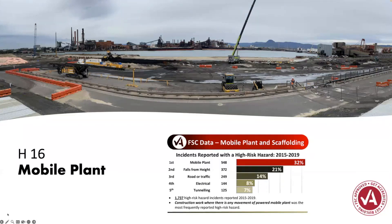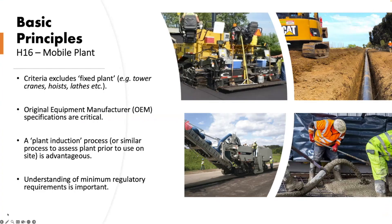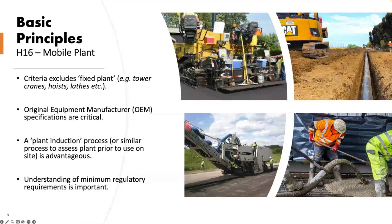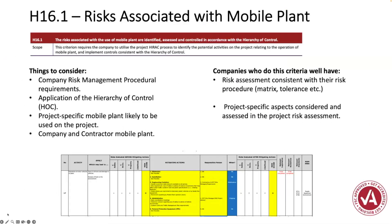Mobile plant is quite high comparably to falls from height and traffic — we do a lot of audits on mobile plant because it's one of the most common hazards across all projects. The scheme covers a large extent with over 600 companies accredited and people doing all different types of construction work. Basic principles: the criteria excludes fixed plant, so we're looking at mobile plant propelled under its own propulsion. OEM specifications are critical — there are a number of criteria that point to that. A plant induction or onboarding process to assess plant prior to use on site is advantageous, and understanding minimum regulatory requirements in your jurisdiction is also important.